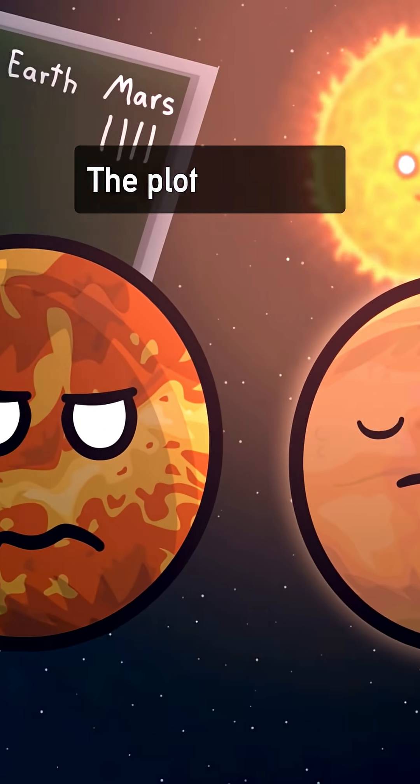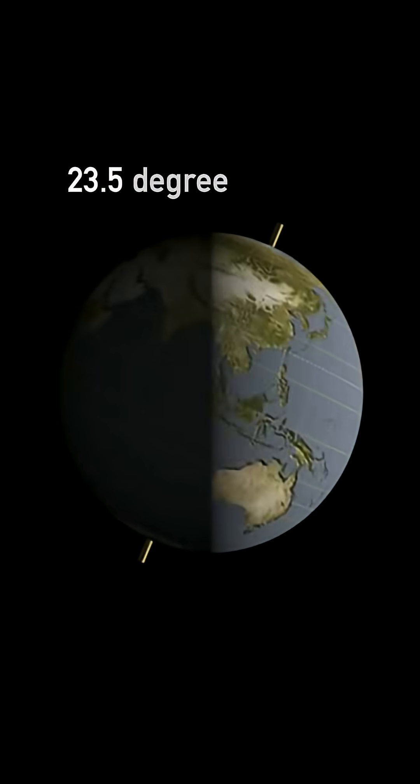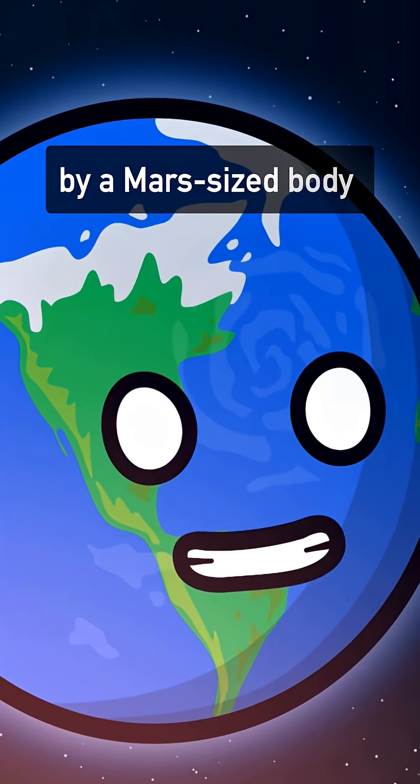The plot thickens. Earth also has an unusual 23.5 degree axial tilt, which could be because it was once impacted by a Mars-sized body.